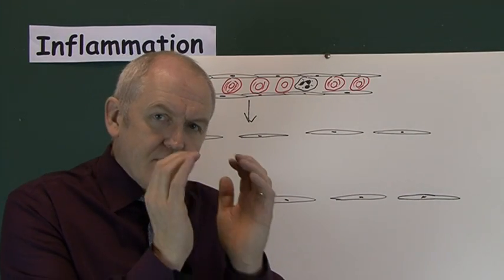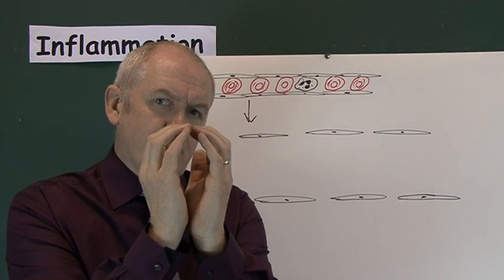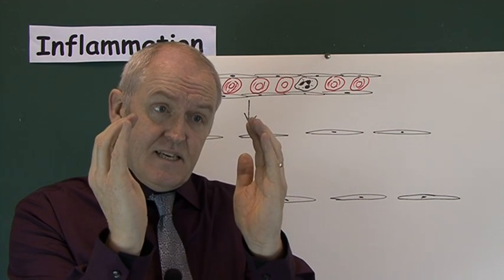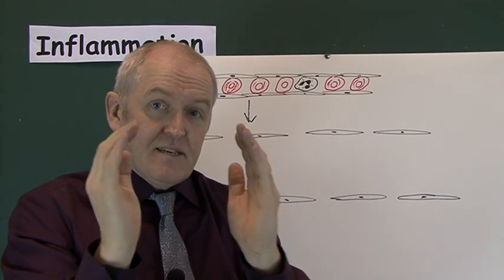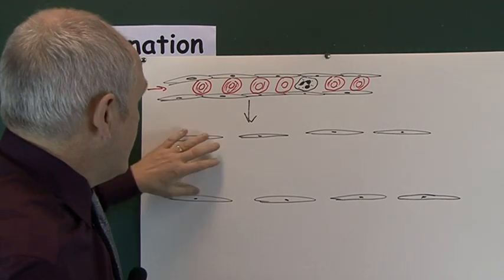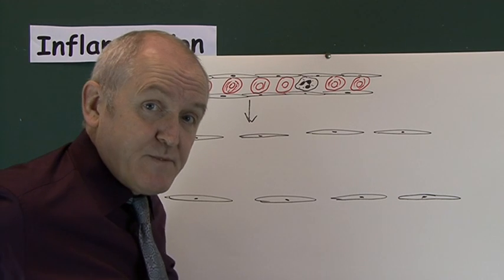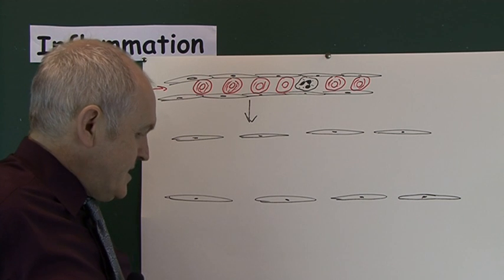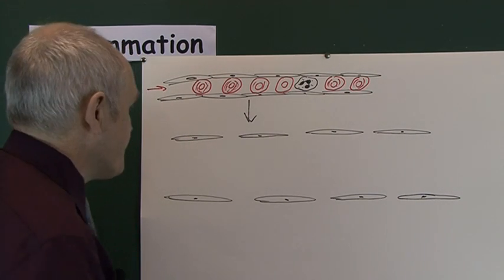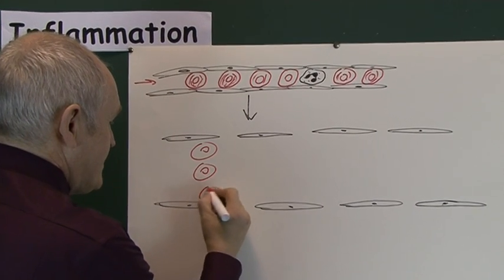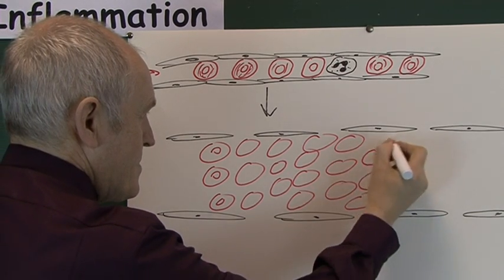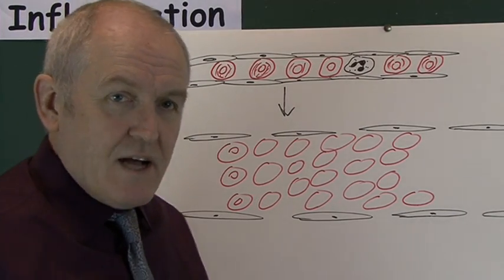In a normal capillary there are only small gaps between the endothelial cells comprising the capillary wall. But when the capillary is dilated, the cells don't stretch — in fact the cells can even get smaller — so you get bigger gaps between the individual cells. When the arterioles and capillaries dilate in the inflammatory response, a lot more blood can get through that area, so there is now space for lots of red cells to pass through simultaneously.